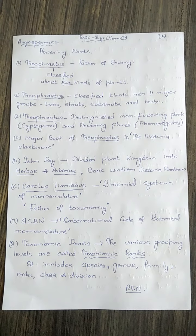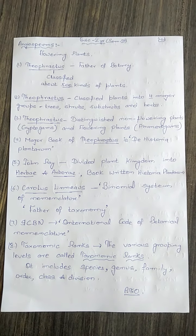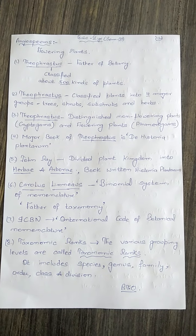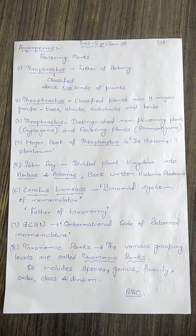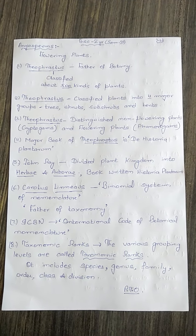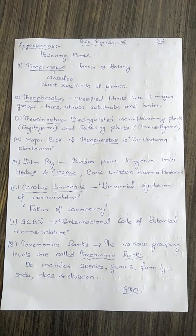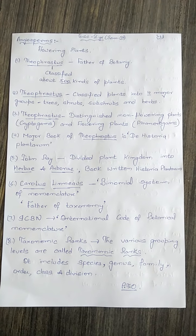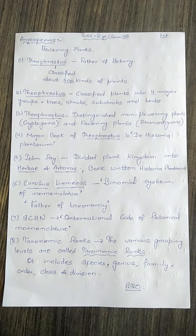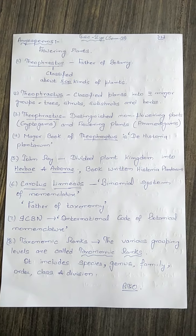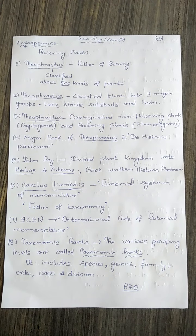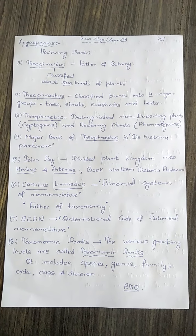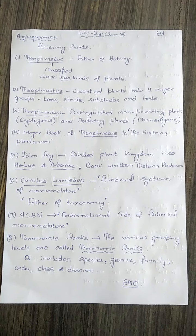Another contribution of Theophrastus is that he classified plants into four major groups: trees, shrubs, sub-shrubs, and herbs.